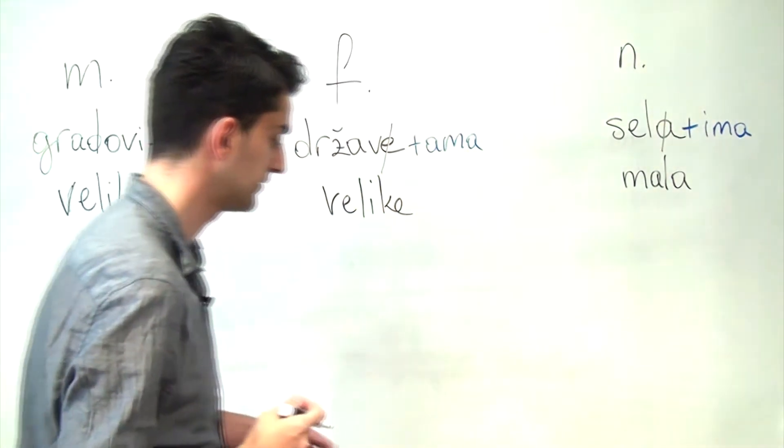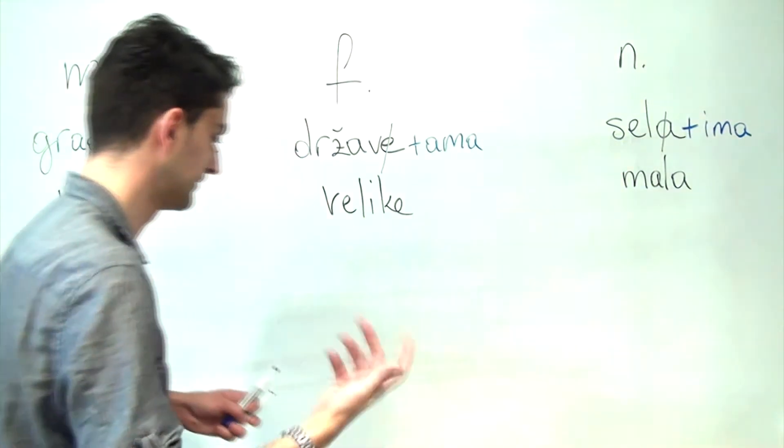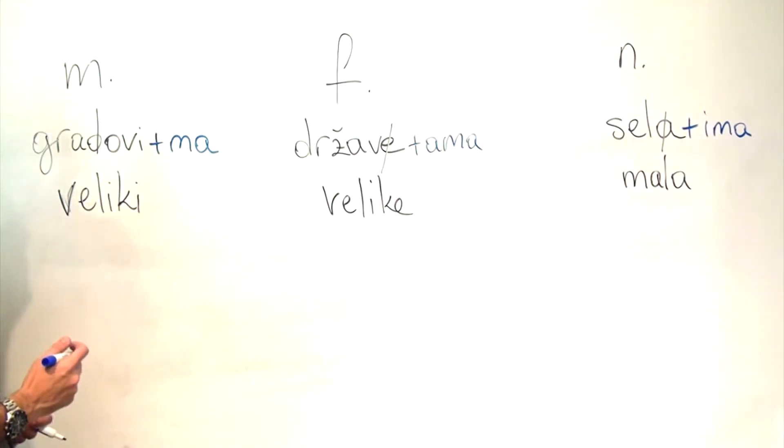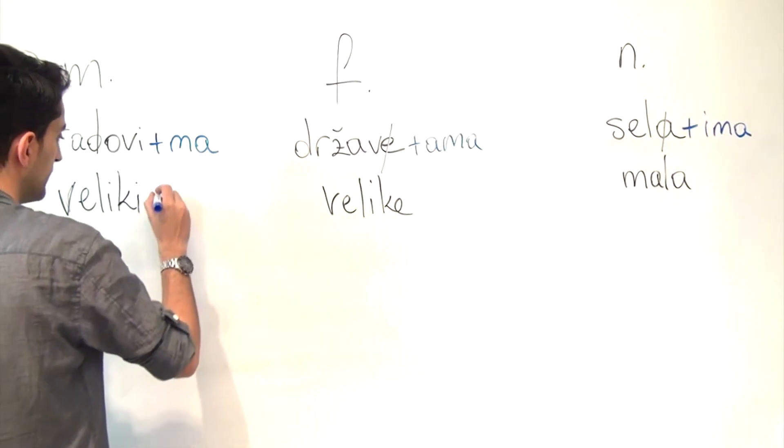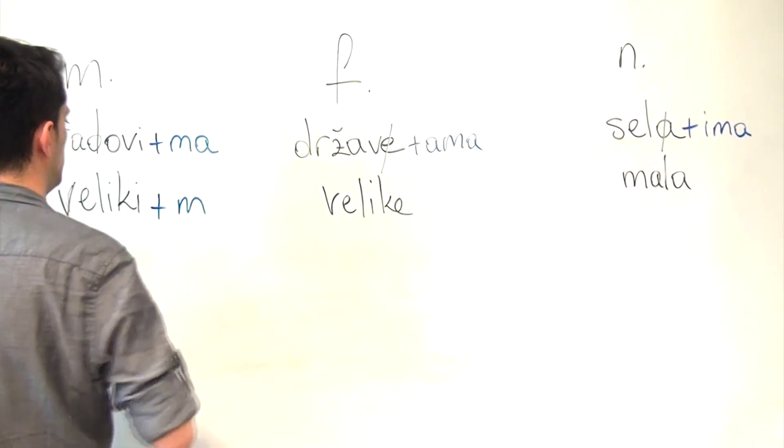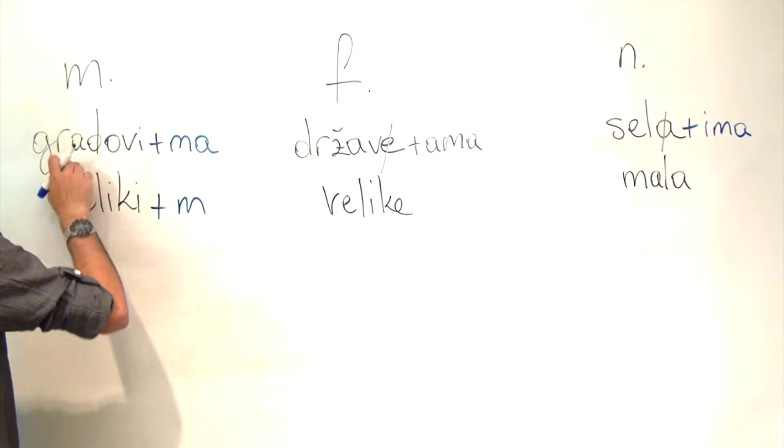It's relatively simple, as is the case with the locative. So here what we need to do is simply add M and what we get is velikim gradovima.